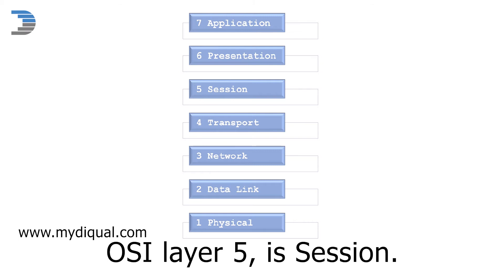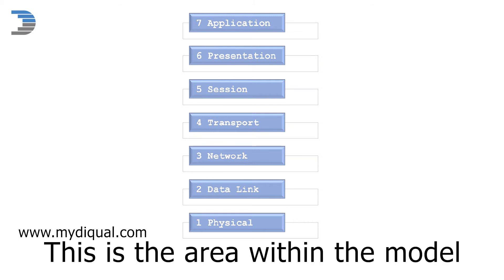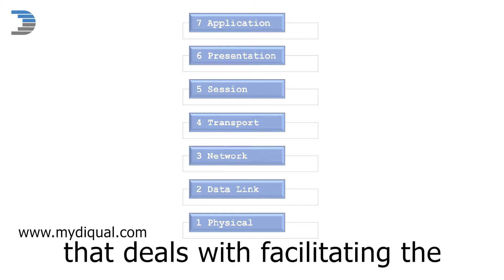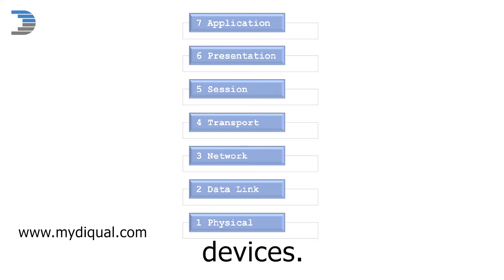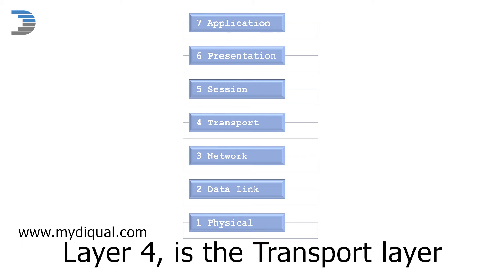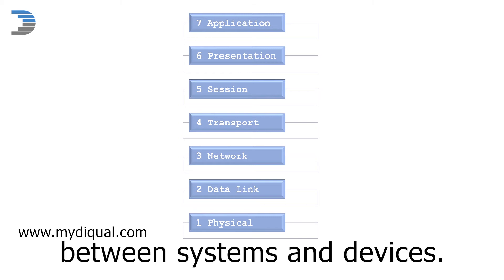OSI layer 5 is session. This is the area within the model that deals with facilitating the communication between two devices. Layer 4 is the transport layer, and it coordinates data transfer between systems and devices.